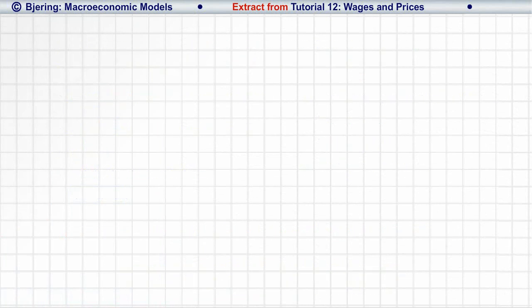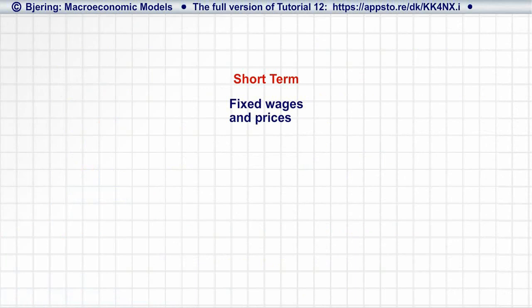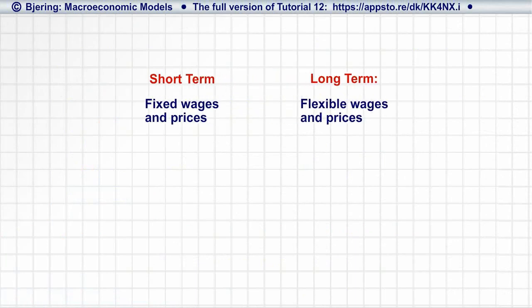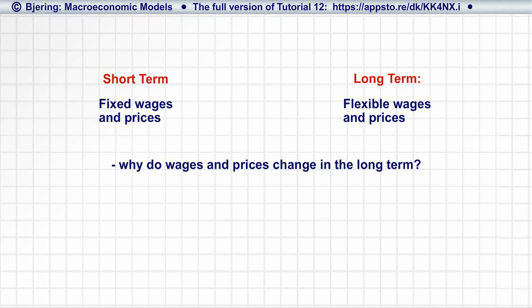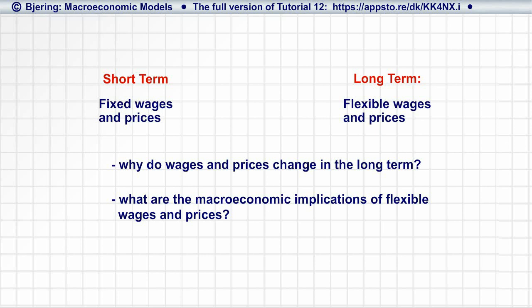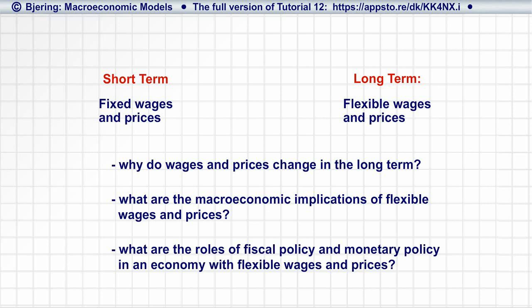The models of the previous tutorials were short-term models of the economy, in the sense that they were based on the assumption that wages and prices are fixed. In the next tutorials, we lift that restriction and focus on three main questions: Why do wages and prices change? What are the macroeconomic implications of flexible wages and prices? And what are the roles of fiscal and monetary policy in an economy with flexible wages and prices?